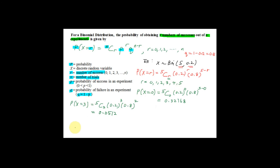Let's try P(X = 4). This equals 5C4 × (0.2)^4 × (0.8)^(5−4), which is (0.8)^1. Press the calculator and your answer should be 0.0064. Make sure you understand this, because for all binomial distribution questions you have to apply the probability formula and know how to compute all the probabilities.